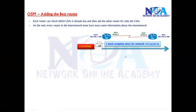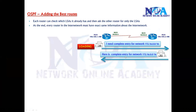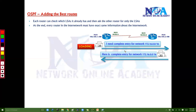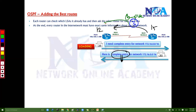That neighbor responds back with the complete entry for the missing LSAs. In the previous exchange stage, they only exchanged a summary or list. Now it sends only the three remaining complete LSAs — not all 15 — just the three that were missing. So it sends only the remaining three in this loading stage.